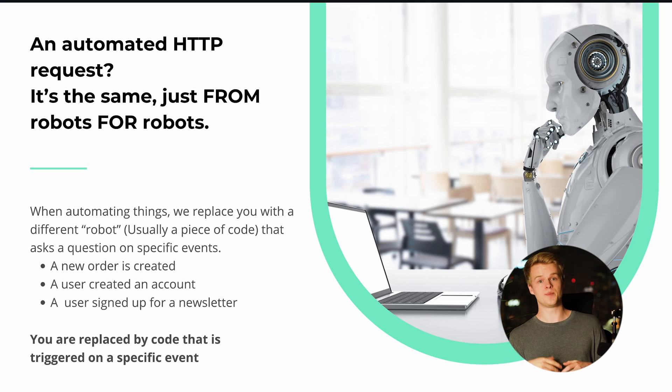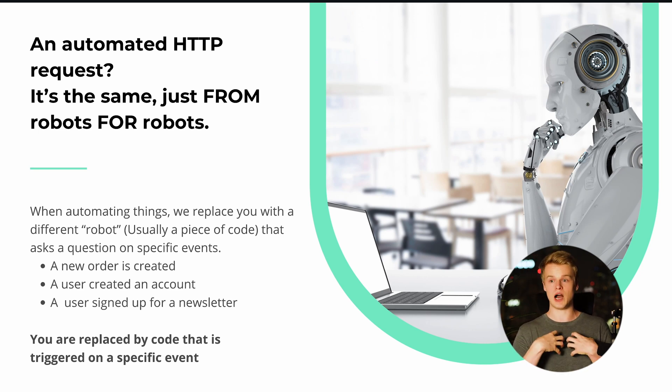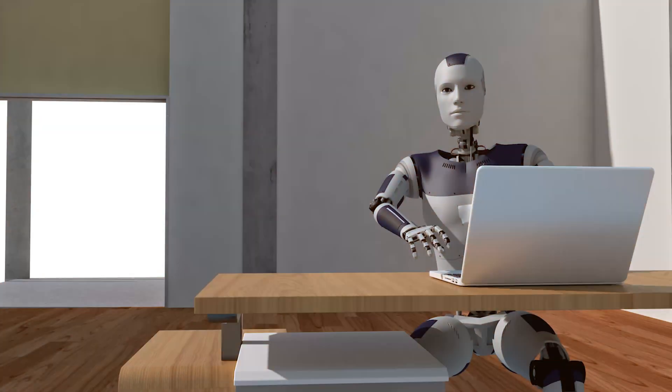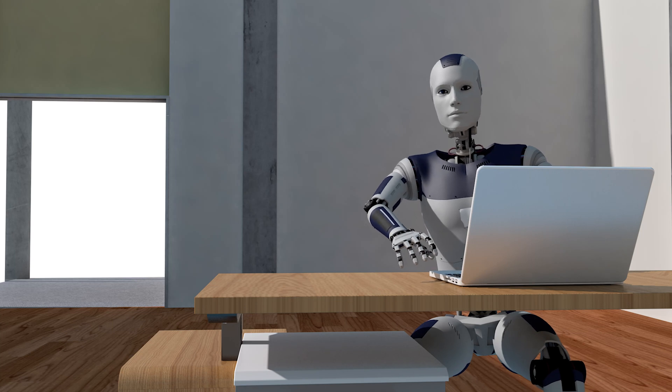From an automation perspective there's still one issue: us. We don't want to be involved in an automation — why build one if we're still required? So we take this one step further with automated HTTP requests, replacing ourselves with another robot. We basically let a robot talk with another robot. This is where the magic lies — we can remove all human interference and automate things from one point to another using only technology.